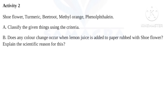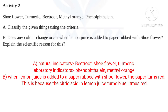Activity number 2. Classify the given things — shoe flower, turmeric, beetroot, orange, and phenolphthalein — using the criteria. How do we classify these? Natural indicators and laboratory indicators.